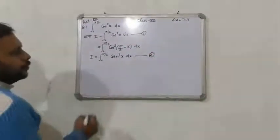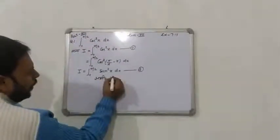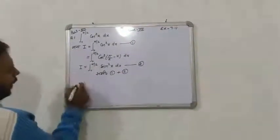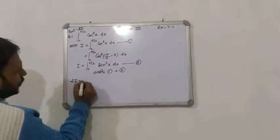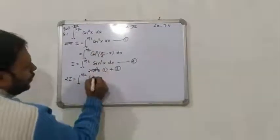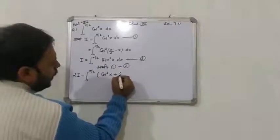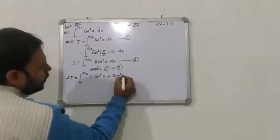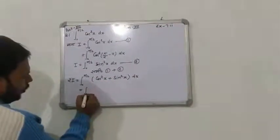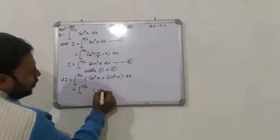अब आपने क्या किया — समी करा, 1 plus 2, यानी equation 1 और 2 को जोड़ दिया। I और I मिलकर 2I हो गए। Limit 0 से π/2, पहली equation में था cos²x, plus दूसरी equation में है sin²x, और इसका dx. तो cos²θ + sin²θ = 1.